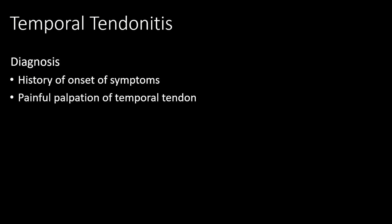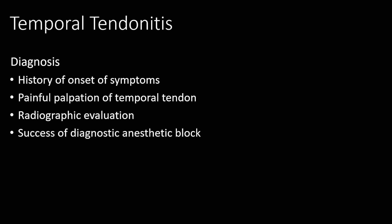How do we diagnose temporal tendonitis? First, it's a history of the onset of symptoms — common causes being opening the mouth too wide or too long, and being struck in the jaw. A palpably painful temporal tendon is noted in people with temporal tendonitis when you insert a finger inside the mouth — I'll show you in a moment — that actually produces pain in the temple, the face, and even the ear. We also look at X-rays to determine if there's a problem with the coronoid process on the lower jaw.